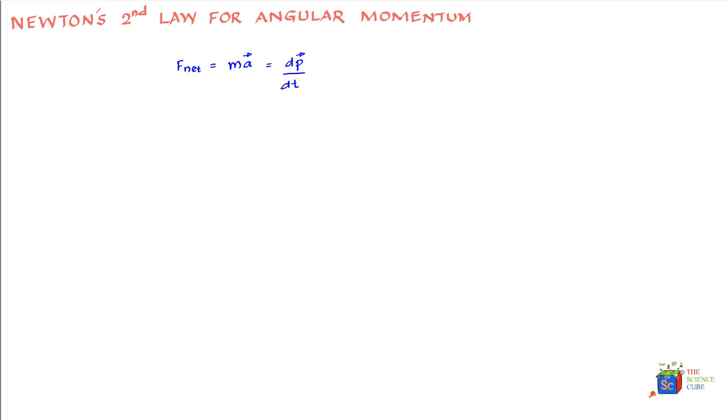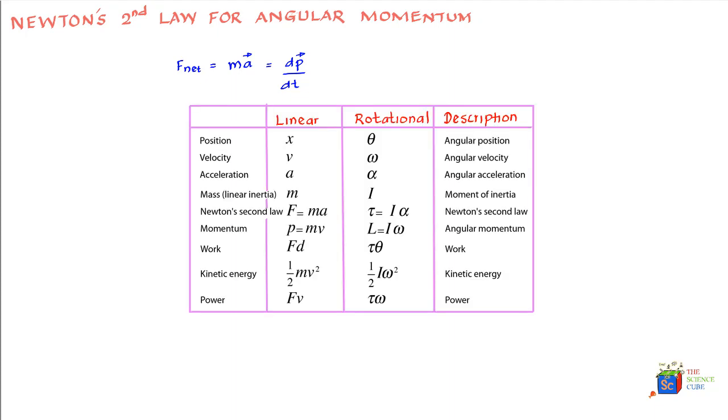Where p is the linear momentum of the particle. The question is, the way we draw analogy of most angular variables with linear variables, can we draw a similar analogy here? If this is true, we can say that the net torque acting on the particle should equal dL/dt.